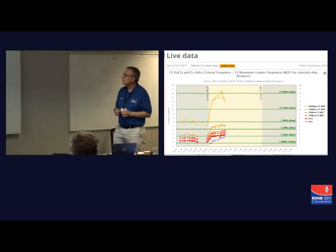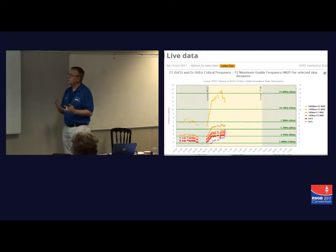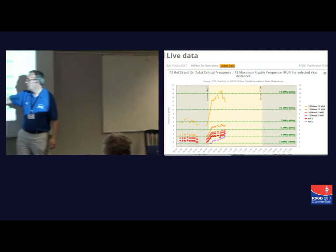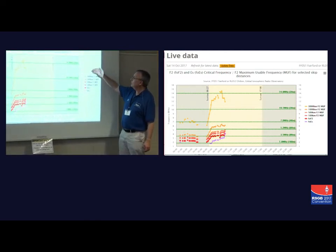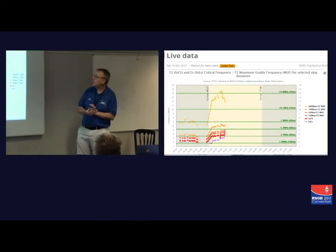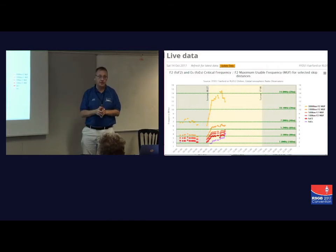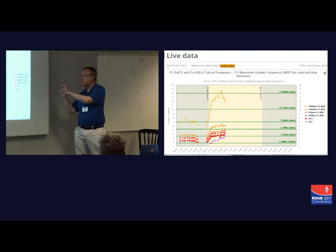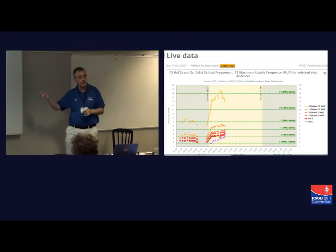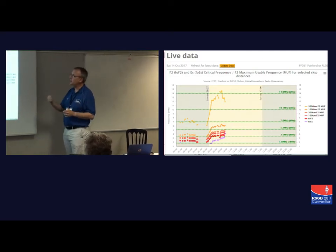One of the tools we've been working on — which Jim Bacon has developed — plots the critical frequency from either Fairford or Chilton in real time and overlays it with predictions for maximum usable frequencies over different path lengths. From this we can see that the foF2 or critical frequency was below 5 MHz here, but it was suggesting these are the kind of maximum usable frequencies we're going to get over different path lengths. This is currently on a site called Convective Weather, and it's going to be moving very soon to propquest.co.uk.